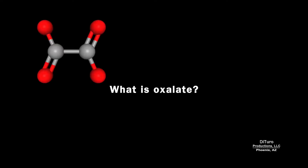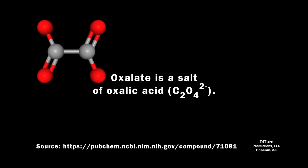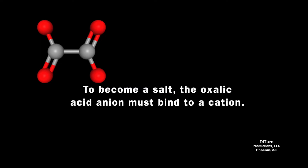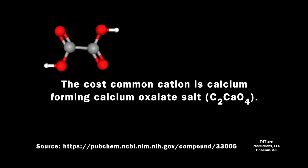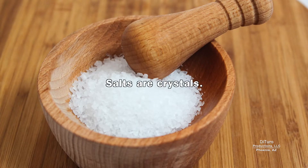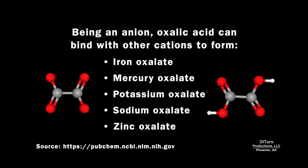What is oxalate? Oxalate is a salt of oxalic acid. To become a salt, the oxalic acid anion must bind to a cation. The most common cation is calcium, forming calcium oxalate salt. Salts are crystals. Being an anion, oxalic acid can bind with other cations to form iron, mercury, potassium, sodium, and zinc oxalate.